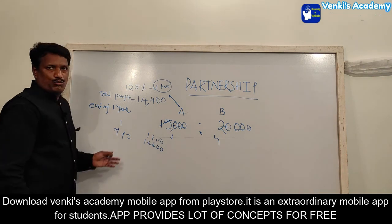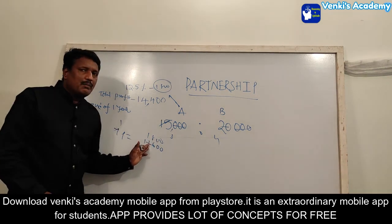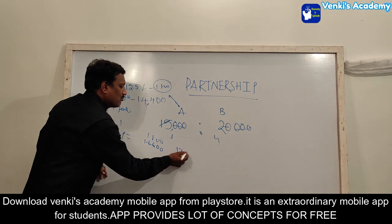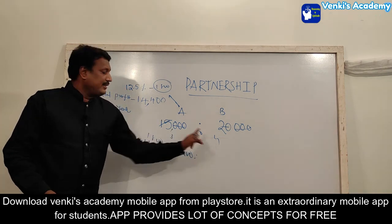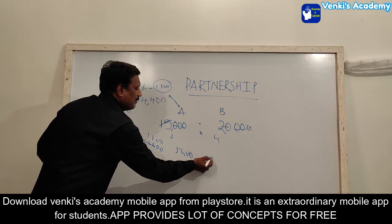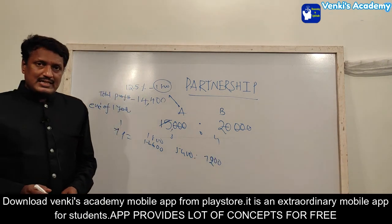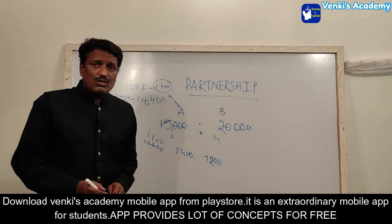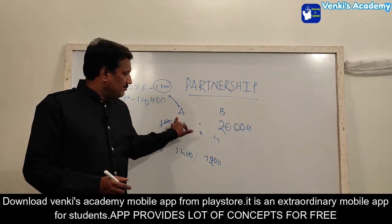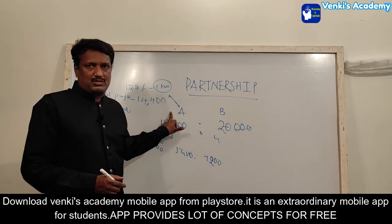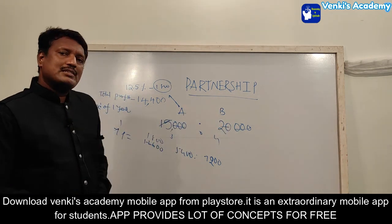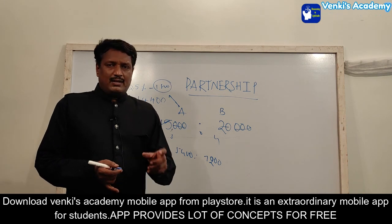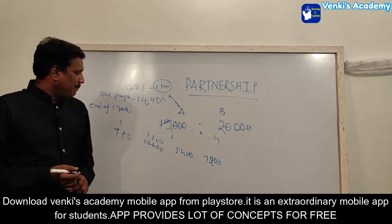So A's total share: A gets 3 parts of 12,600 which is 5,400, plus the 1800 commission. B gets 4 parts which is 7,200. In the sleeping partner model, find the share of A and B. A is the active or working partner, B is the sleeping partner.